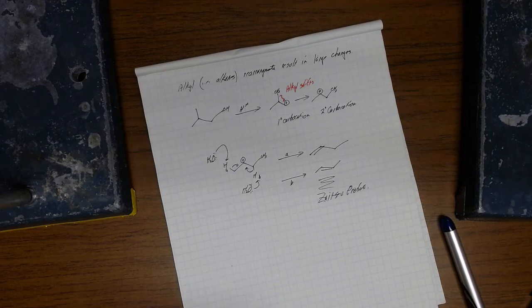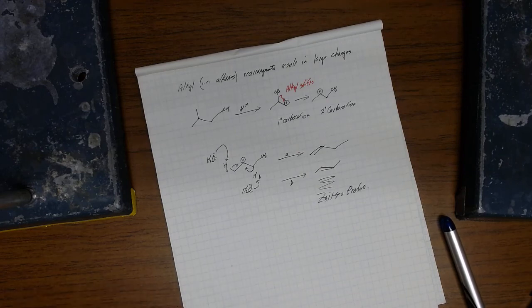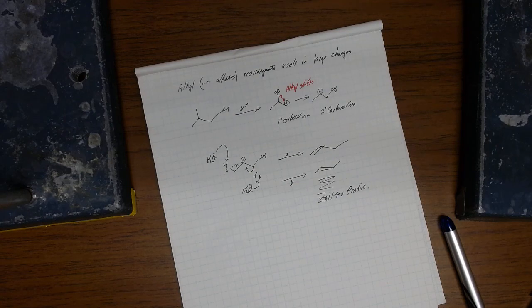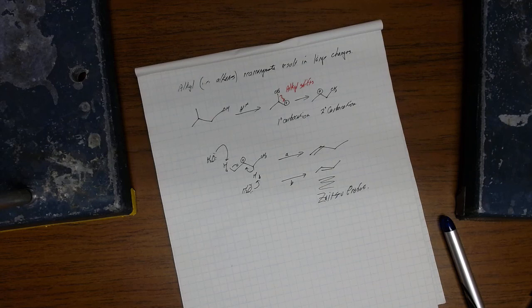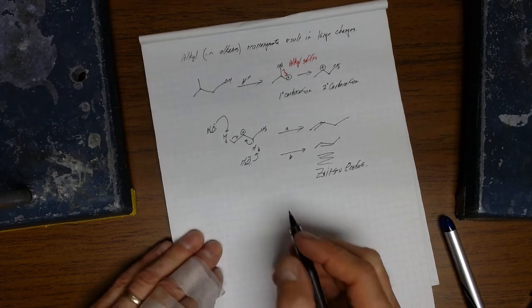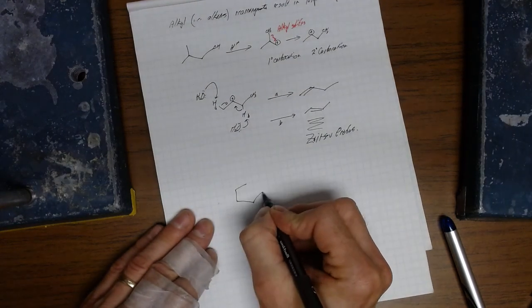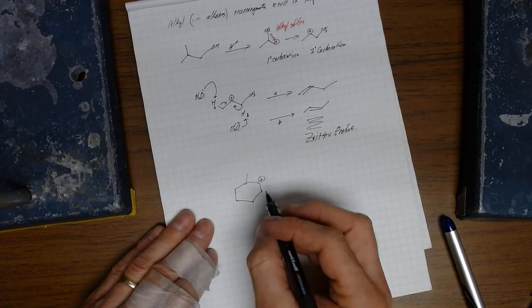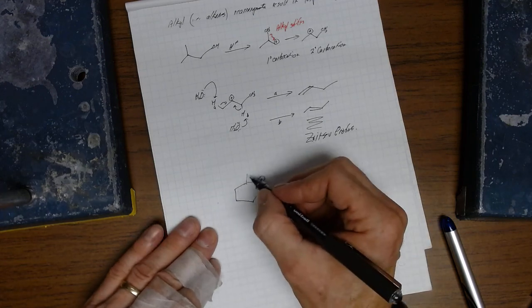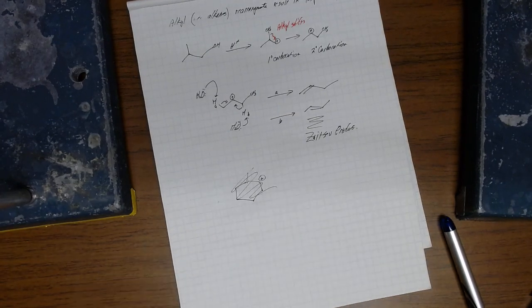So, the guiding principle I want you to take away from this is that carbocations will rearrange to make a more stable carbocation, and that net result is these double bonds move all over the place. The double bonds can move because of the hydrogen changes, and then followed by a deprotonation. Or, in the case of the alkyl shift, we can actually get larger carbocation rearrangements. So, maybe I'll give you a little bit of a hint. No, I won't. I'll leave that to you. That'll be a bonus. See if you guys can figure it out. And that's all I got for you.